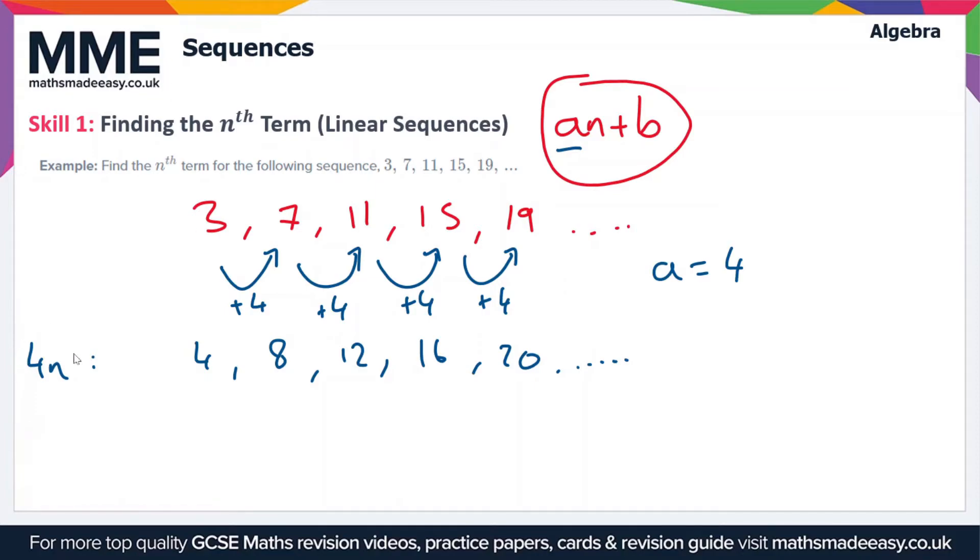Now how do we get from the sequence 4n to the sequence we're given in the question? Well we have to subtract 1 from each term in the sequence 4n to get to the sequence that we were given. So 3 is 1 less than 4, 7 is 1 less than 8, 11 is 1 less than 12 and so on. So our nth term is 4n minus 1.